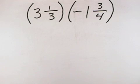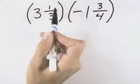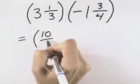So for the first fraction, what we'll have is 3 times 3 is 9, plus the 1 in the numerator is 10, so the first one will become 10 over 3.